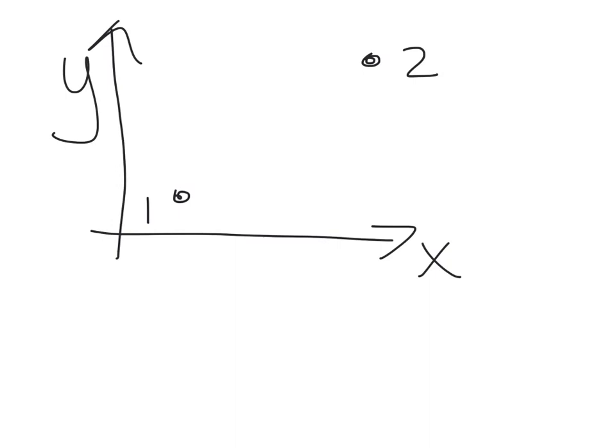A nice example of a place where we can use the calculus of variations is to study the shortest path between two points. So let's think about an x- and y-coordinate system. Let's imagine we have one point and another point, point 1, point 2. And we're interested in solving for the shortest path between those two points.